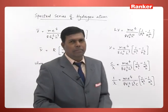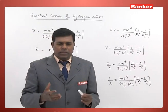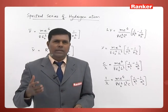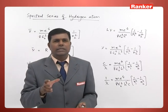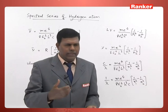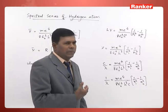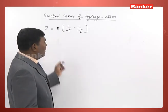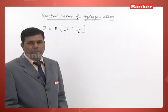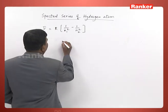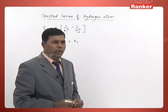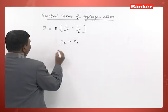This Rydberg constant can be used to determine the wavelengths of spectral lines and spectral series obtained in the hydrogen spectrum. When you take the hydrogen spectrum, a series of lines is obtained which are not evenly distributed. Each set of lines is known as a spectral series, and the hydrogen spectrum consists of a number of spectral series named after various scientists. The empirical formula for wave number is: ν-bar = R × (1/n1² − 1/n2²), where n2 should always be greater than n1.